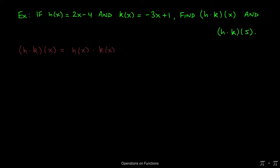(h ⋅ k)(x) is essentially just h(x) times k(x). This is just notation for the product of the two functions we're given.